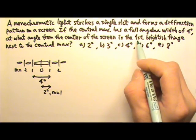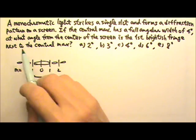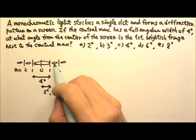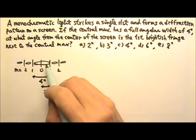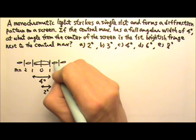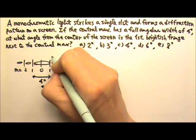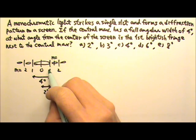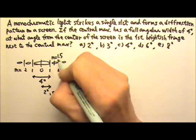Now what we want is the first brightish fringe next to the central maximum. So that will be the first brightish fringe next to the central maximum. For this fringe, the M value is between 1 and 2, that is 1.5.